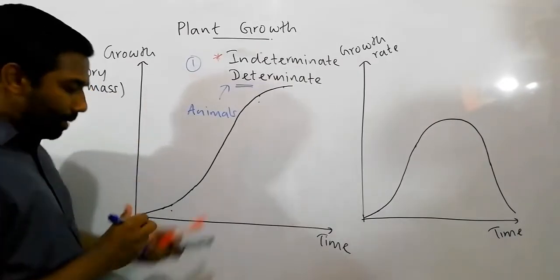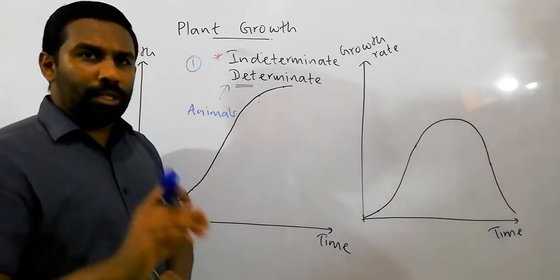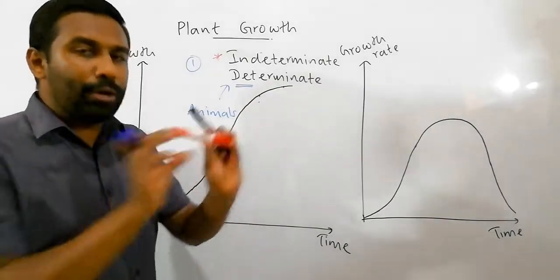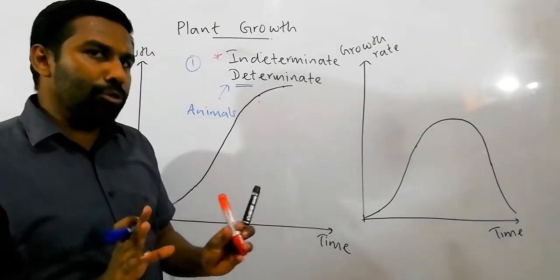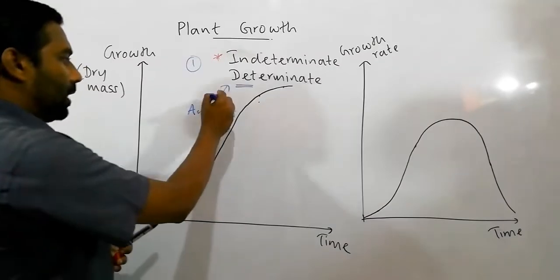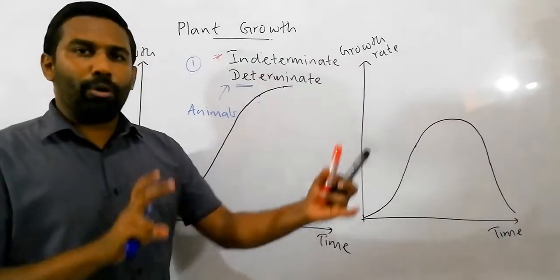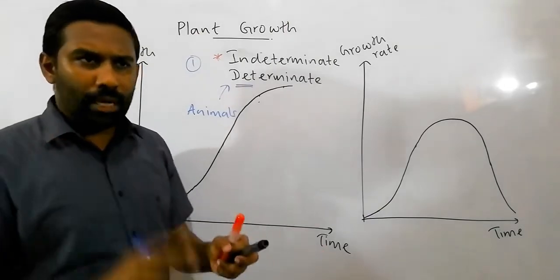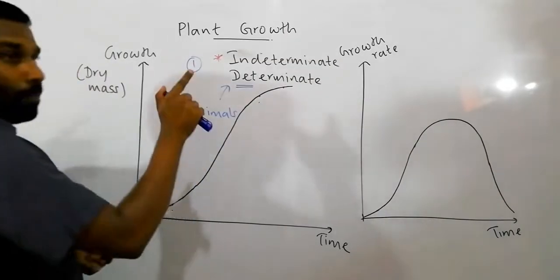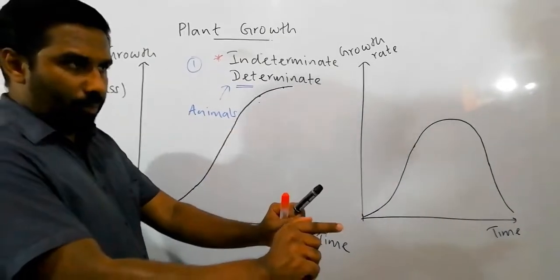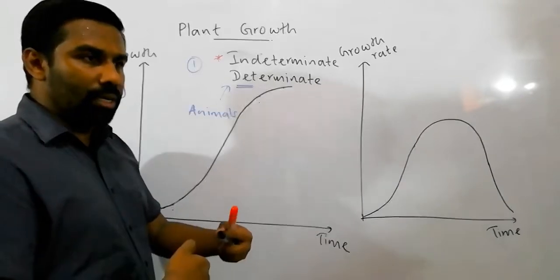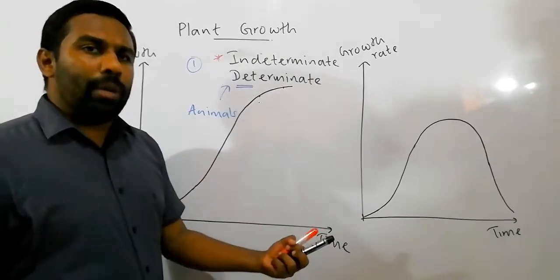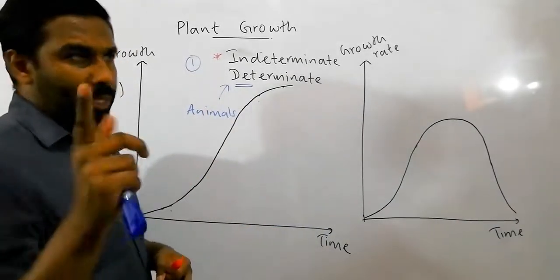The first difference: perennial plants show indeterminate growth, while animals show determinate growth. The second difference: growth of a plant occurs due to the activity of meristems — growth is confined to meristems, and permanent tissues do not involve in growth. In animals, growth is not confined to a particular part; all body parts of an animal proportionally grow during the growth period.